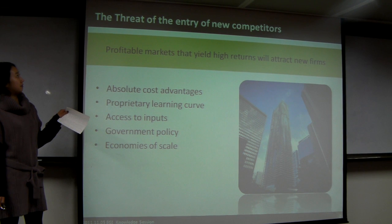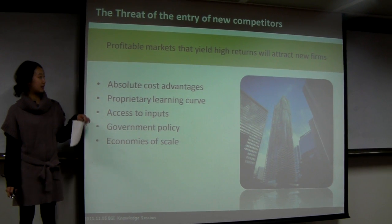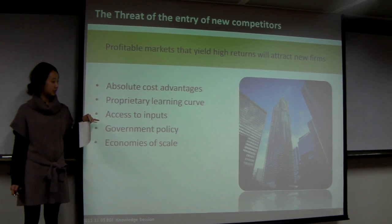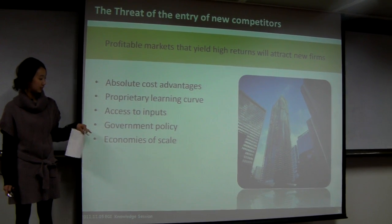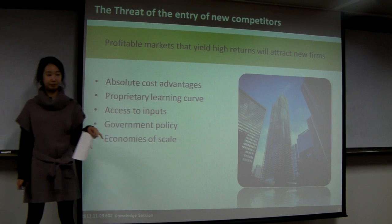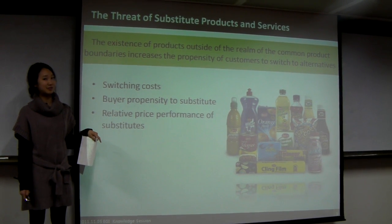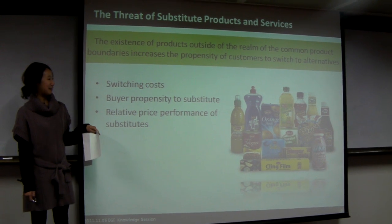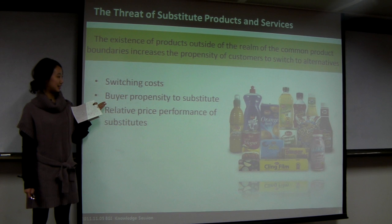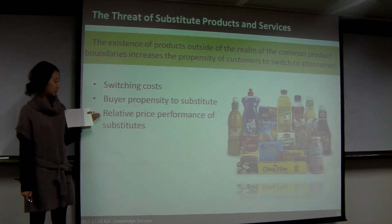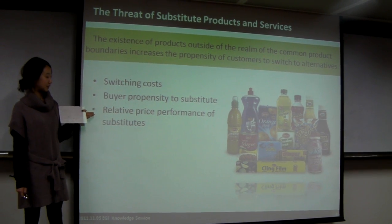First of all, the threat of entry of new competitors can be diminished by absolute cost advantages, access to inputs, and economies of scale. The threat of substitute products can be affected by switching costs, the propensity to substitute, and the relative price performance of substitutes.